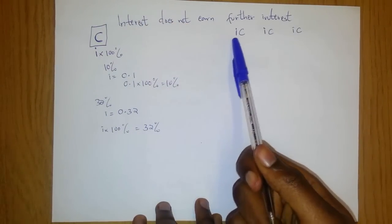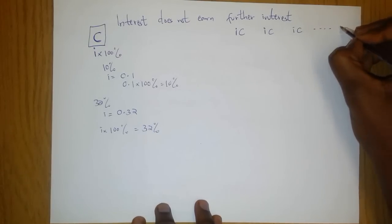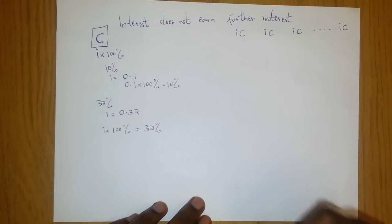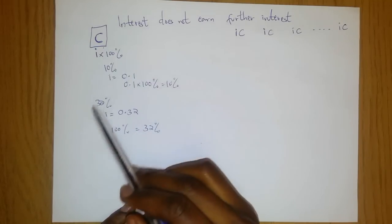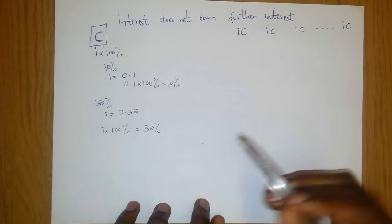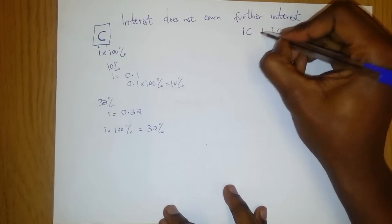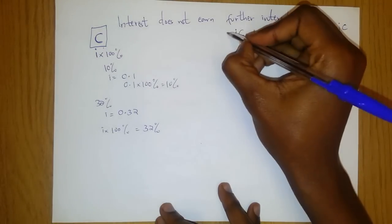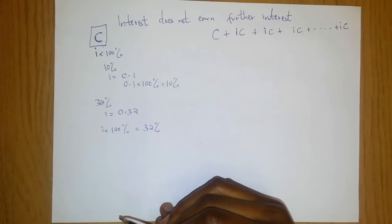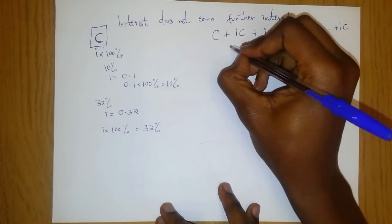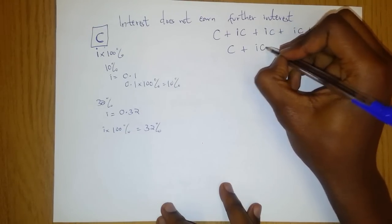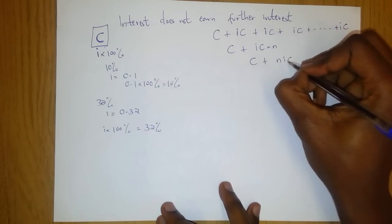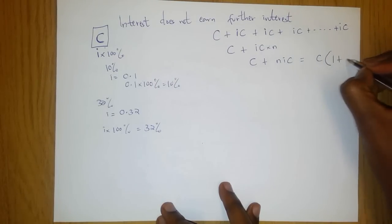At the end of N years, if you are asked what the accumulated value of C is at a rate of interest i, you simply add up the interest received over N years. Then, of course, you also get back the initial deposit C. So this would be C plus N lots of i × C, which is equal to C(1 + Ni). This is how the simple interest formula comes about. For example, if the rate of interest is 10%, then i = 0.1. If the rate is 32%, then i = 0.32.